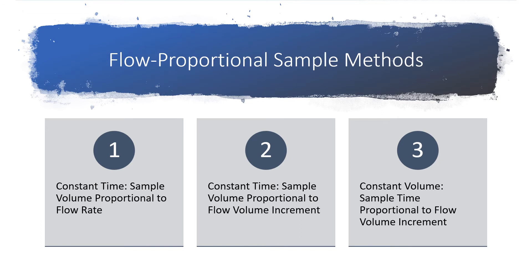Flow-proportional composite samples are more suitable for estimating event mean concentrations and pollutant loads. A flow-proportional composite sample can be collected in several ways. Method 1 is a constant time technique: sample aliquots are collected at equal increments of time during a storm event, and varying amounts of each aliquot are then combined to form a single composite sample. The amount of water used for each aliquot is proportional to the flow rate at the time the aliquot was collected.